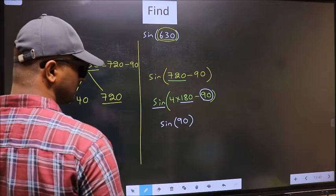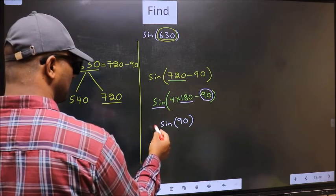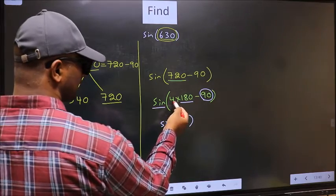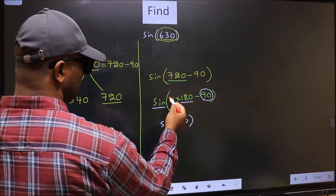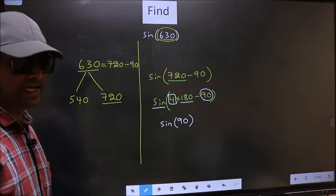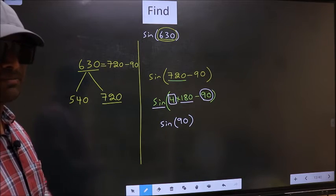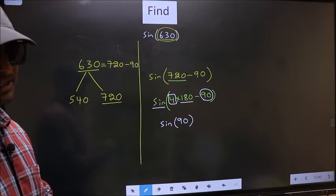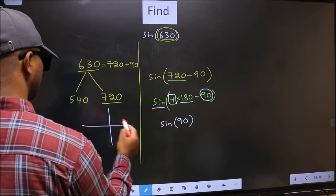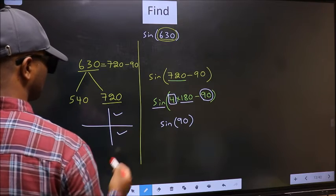Now the question is, will we get here plus or minus? To answer that, we should look at the number before 180. That is 4. And 4 is even. And all the even multiples of 180, they lie in either the first or in the fourth quadrant.